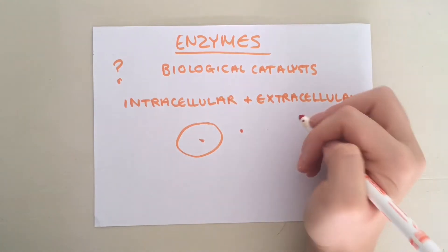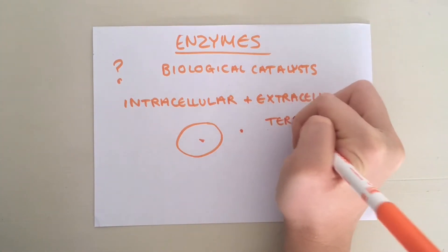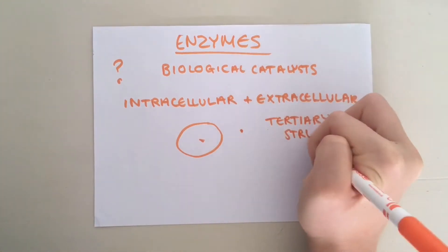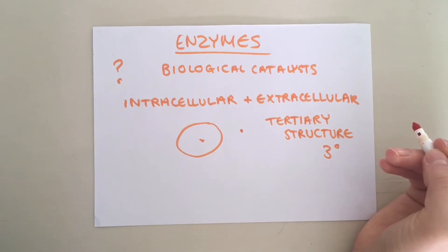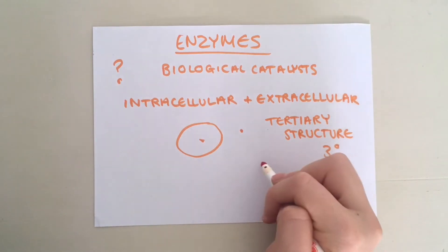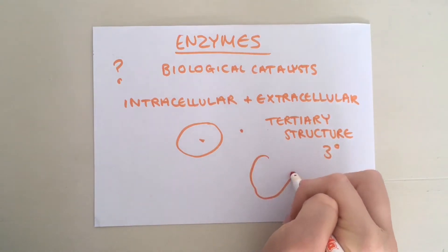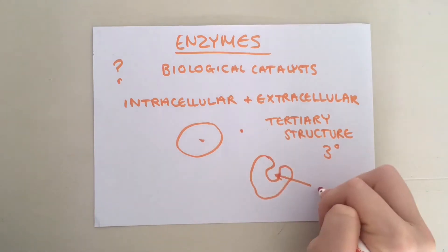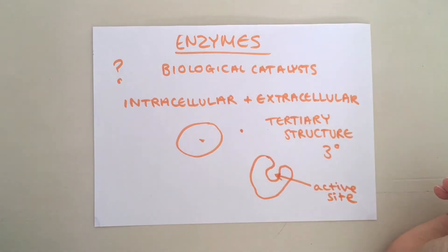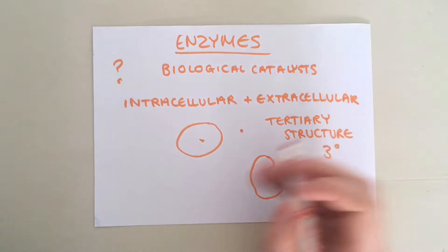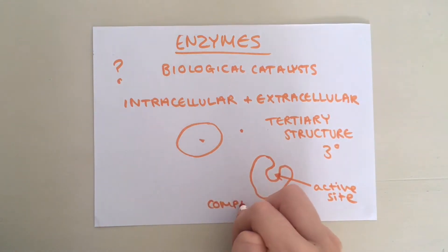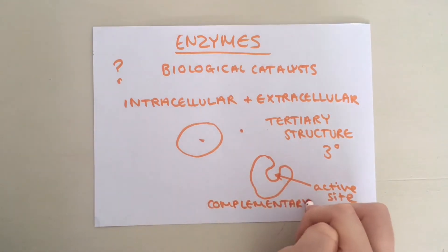Enzymes are globular proteins with a tertiary structure. They have a special site known as an active site into which the substrate molecule fits. The highly specific tertiary structure of each enzyme determines the shape of the active site, and therefore only certain substrate molecules are complementary and can fit.